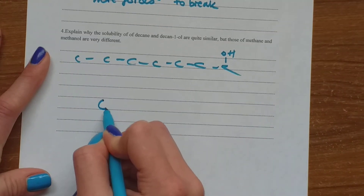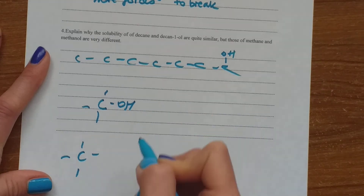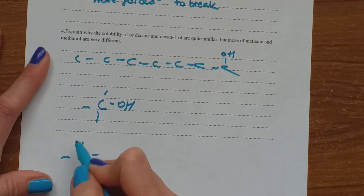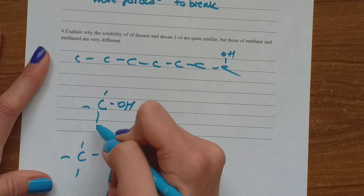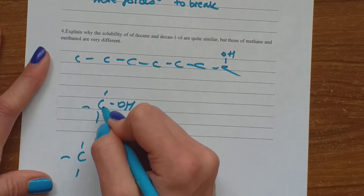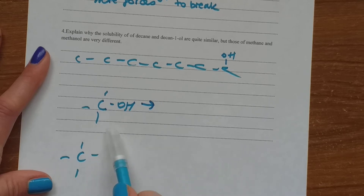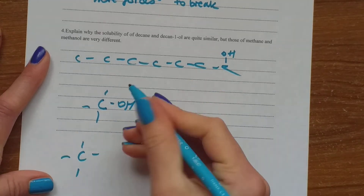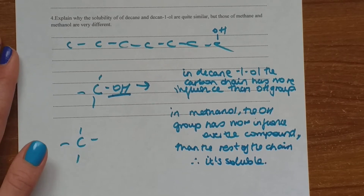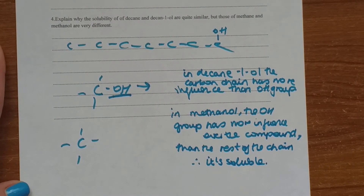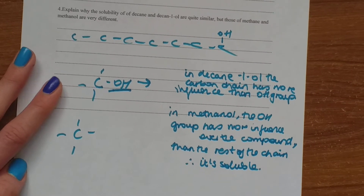In methanol this is quite different, because we only have one carbon. If we add an OH group compared to methane without one — methane is non-polar — this OH has high priority over the non-polar part, because the molecule is much, much smaller. So this alcohol will be very soluble in water due to this polar bond, which is dominant over the whole compound. In decan-1-ol, the carbon chain has more influence than the OH group. In methanol, the OH group has more influence over the compound than the rest of the chain, therefore it's soluble.